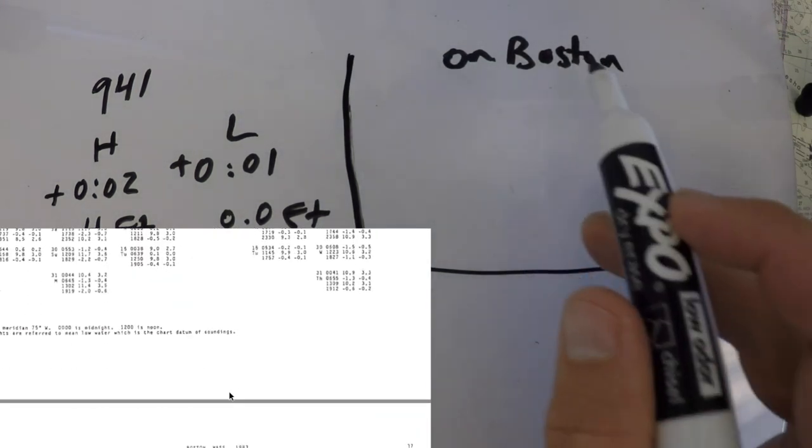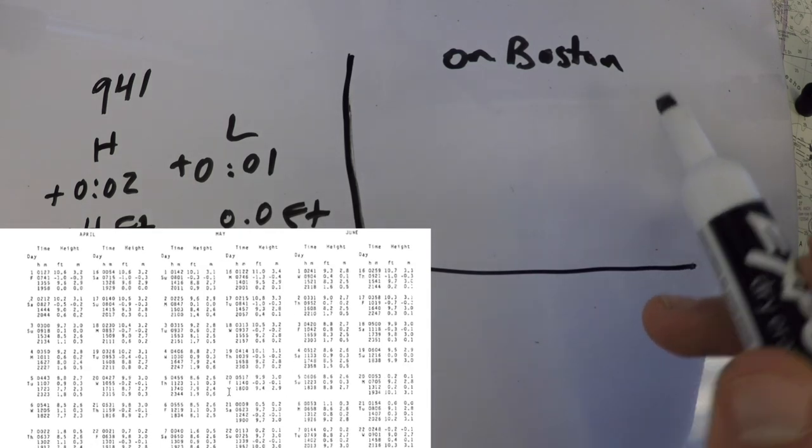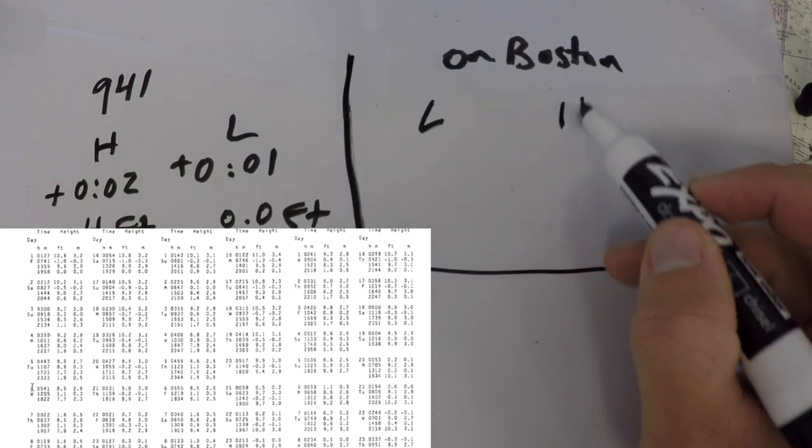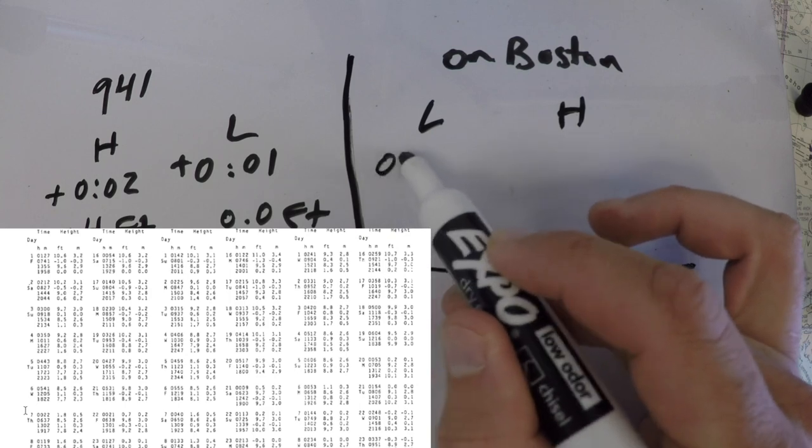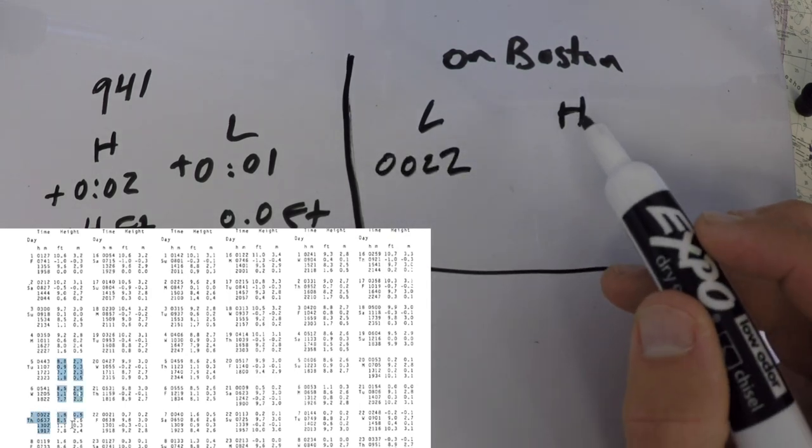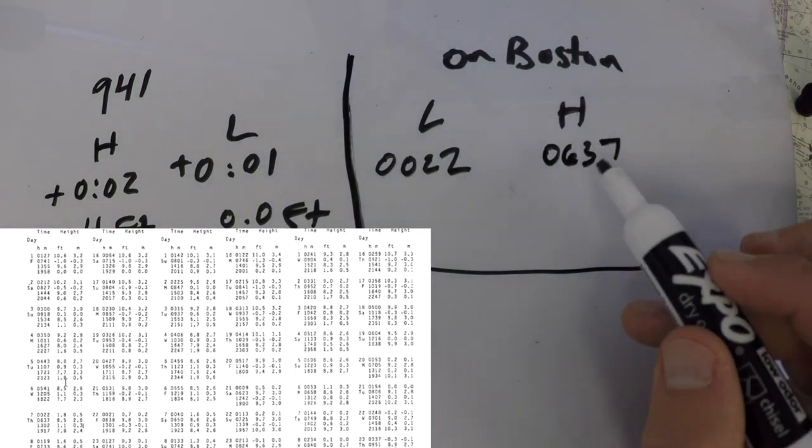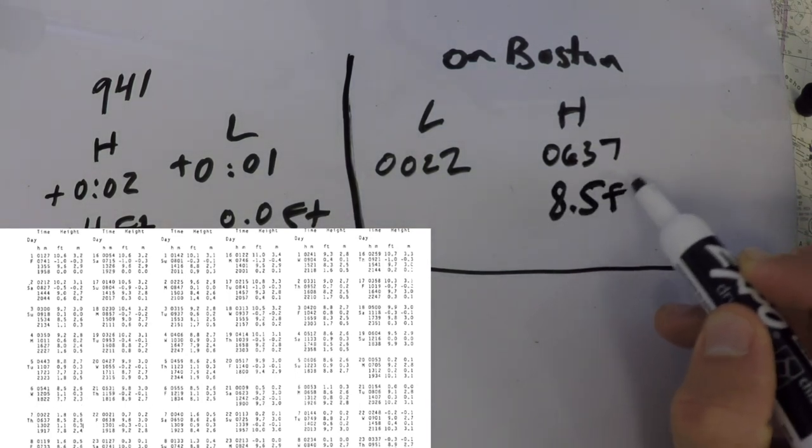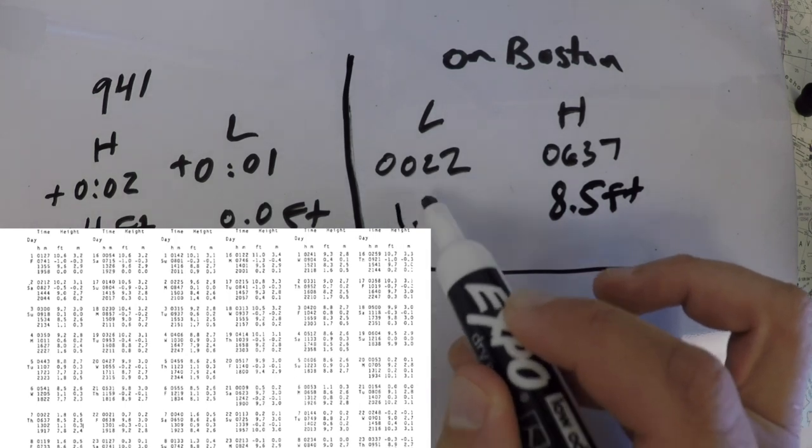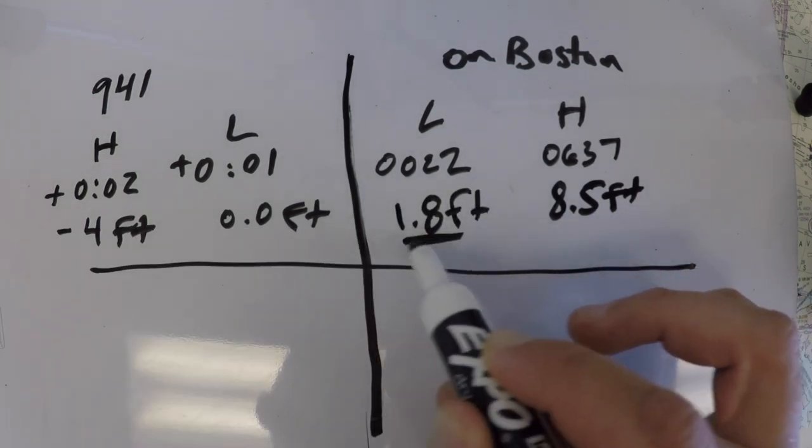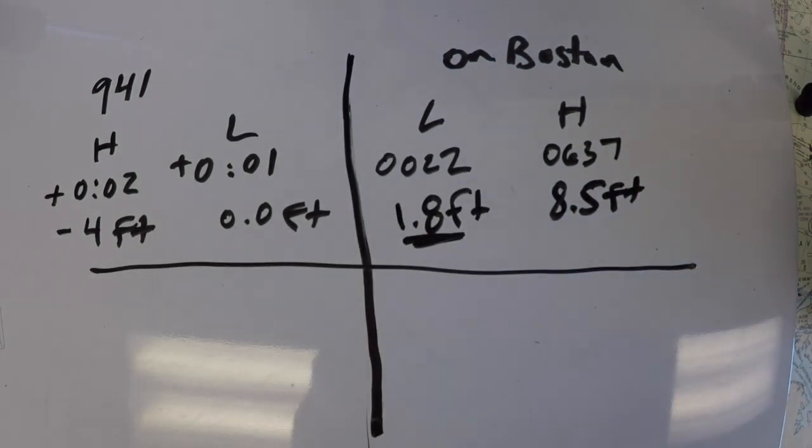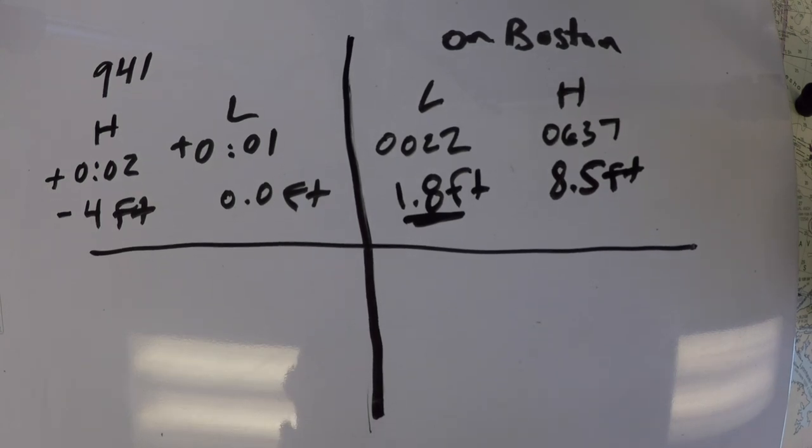And we see that Boston is our reference station. So we look up the tides in Boston for the 7th of April. And we see that there's a low and a high. There's a low at 0022 and a high at 0637. The high is 8.5 feet and the low is 1.8 feet. So notice it's not zero. So that's maybe helpful for us.